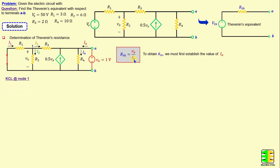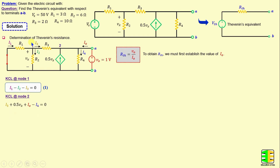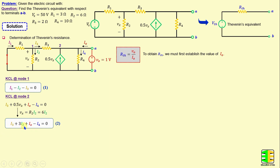By applying Kirchhoff's current law at node 1, we can write: I1 minus I2 minus I3 equals 0. Now by applying Kirchhoff's current law at node 2, we can write: I3 plus 0.5 times Vx plus IO minus I4 equals 0. According to Ohm's law, Vx equals R2 times I2 equals 6 times I2. If we replace Vx in the previous equation, we obtain: I3 plus 3 times I2 plus IO minus I4 equals 0.